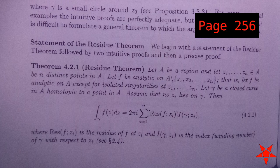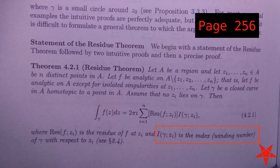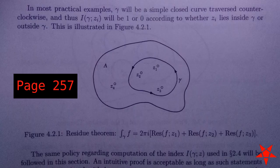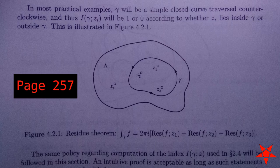the winding number as described on pages 256 and 257 will either be one or zero depending upon whether the singularity in question lies inside or outside of the path of integration.